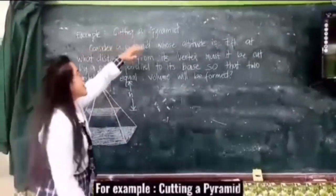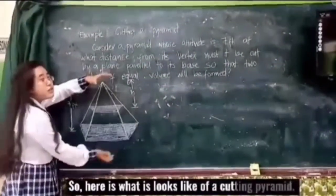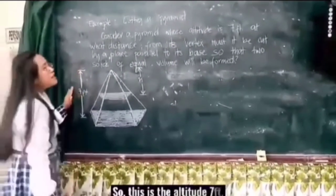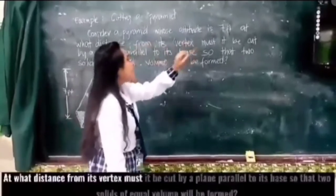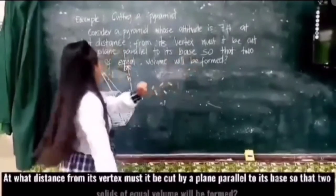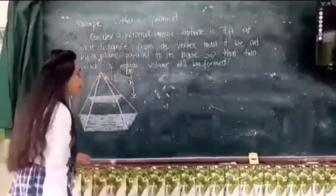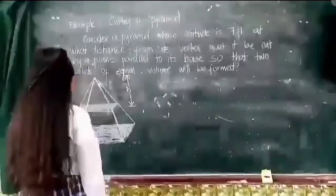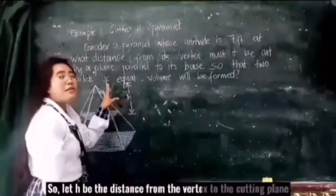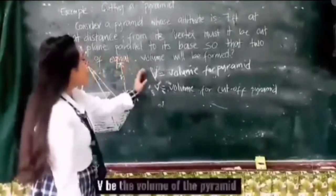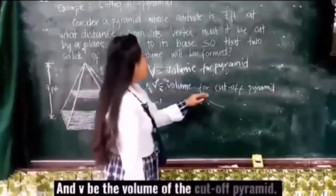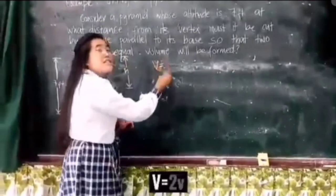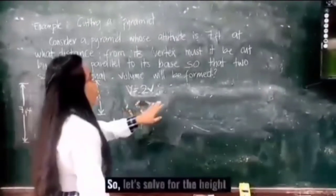For example, cutting a pyramid. Consider a pyramid whose altitude is 7 feet. At what distance from its vertex must it be cut by a plane parallel to its base so that two solids of equal volume will be formed? The type of the pyramid is not mentioned, so we can use any pyramid. Let H be the distance from the vertex to the cutting plane. Let B be the volume of the full pyramid and b be the volume of the cut-off pyramid. Note that B is equal to 2b.